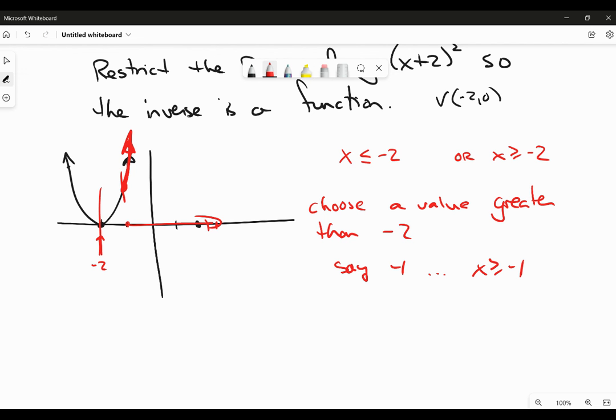What I don't want is the part of the function that goes like this. Because as soon as you invert that, you're going to get something that looks like that, and this isn't a function. Basically, I don't want to include both sides of the vertex because when I find the inverse of that, I'm going to create something that's not a function.